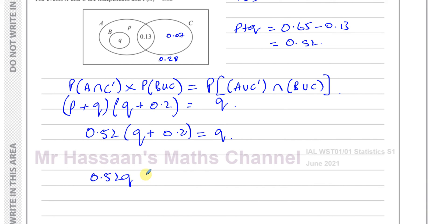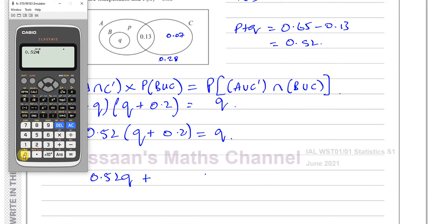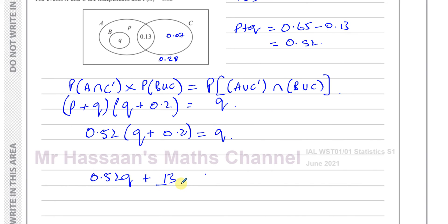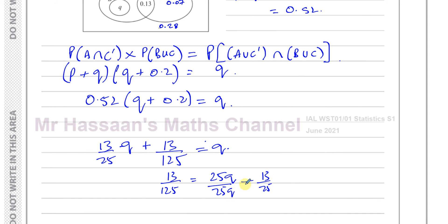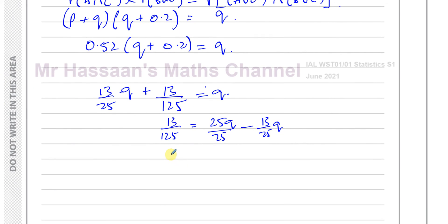Expanding: 0.52Q + 0.52 × 0.2 = Q. Now 0.52 × 0.2 = 13/125, and 0.52 = 13/25. So: 13/25 × Q + 13/125 = Q. Subtracting 13/25 Q from both sides: 13/125 = Q − 13/25 Q = 12/25 Q.